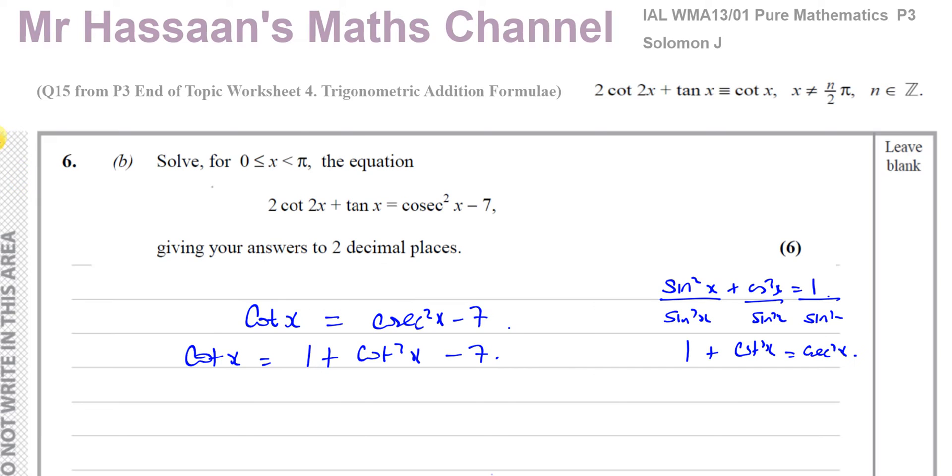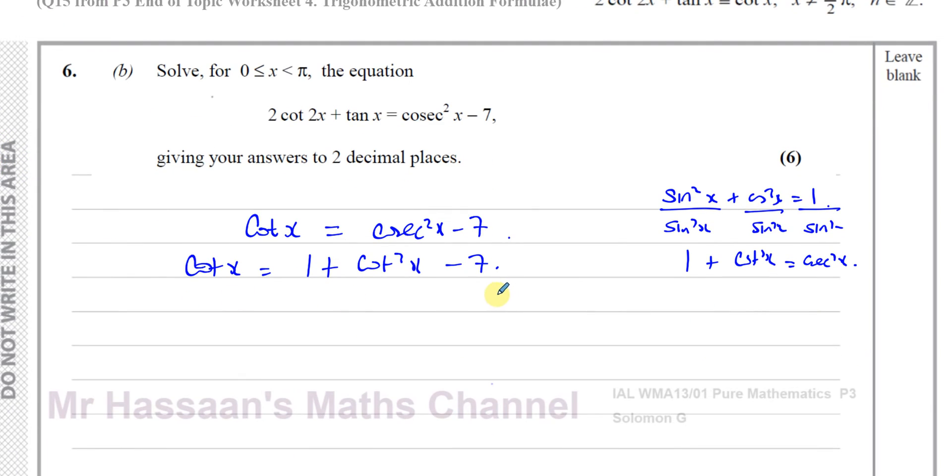And now I can rearrange this to make a quadratic equation involving cot squared x. So if I just subtract cot x from both sides, I have cot squared x minus cot x, 1 minus 7 is negative, minus 6 is equal to 0. I can say let cot x equals a letter, for example, I can call it the letter b if I want. So this gives me b squared minus b minus 6 is equal to 0.